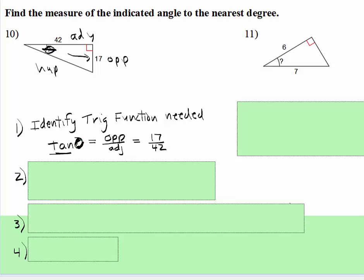I'm going to put theta instead of question mark, so that's opposite over adjacent. That's 17 over 42, so you have that.